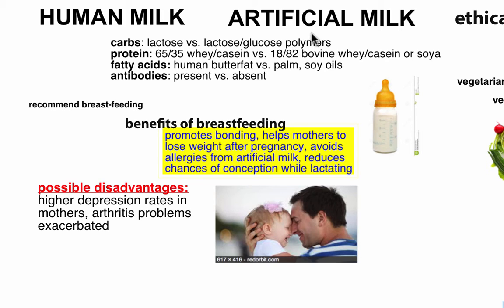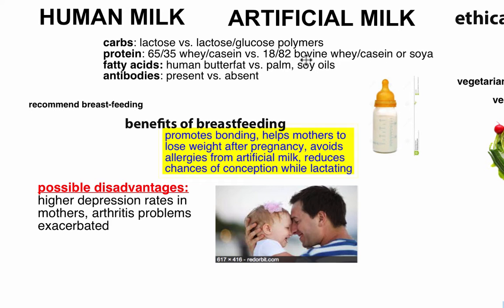In terms of protein content, human milk is 65 to 35 percent whey versus casein protein, while artificial milk is 18 to 82 percent bovine whey and bovine casein, or soy protein. Bovine means cow, so we're talking about cow whey and cow casein for artificial milk.